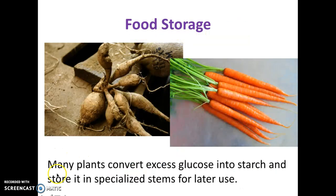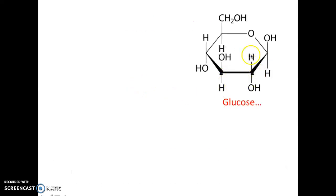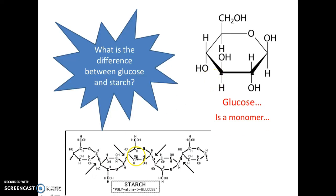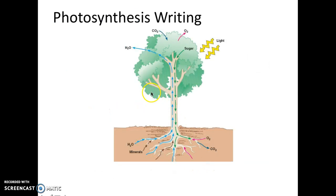The next thing is food storage: many plants convert excess glucose into starch and store it in specialized stems for later use. Many of the vegetables, fruits, and roots that we eat are actually excess glucose that plants make and store for later use, but it never really gets used by the plant. Plants make glucose, and they store it as a form of starch. Glucose is the monomer for that carbohydrate, and starch is a polymer made of many glucose molecules. What is the difference between glucose and starch? Starch is a polymer made of many glucose molecules.